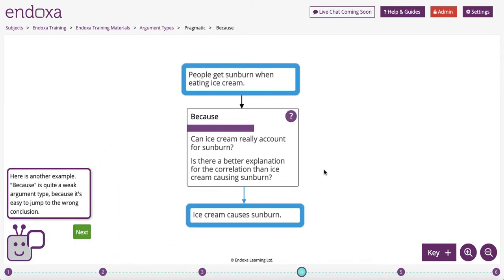Because is quite a weak form of argument. People jump to the wrong conclusions about causes all the time. In this case, we're saying that people get sunburn when eating ice cream, because ice cream causes sunburn.